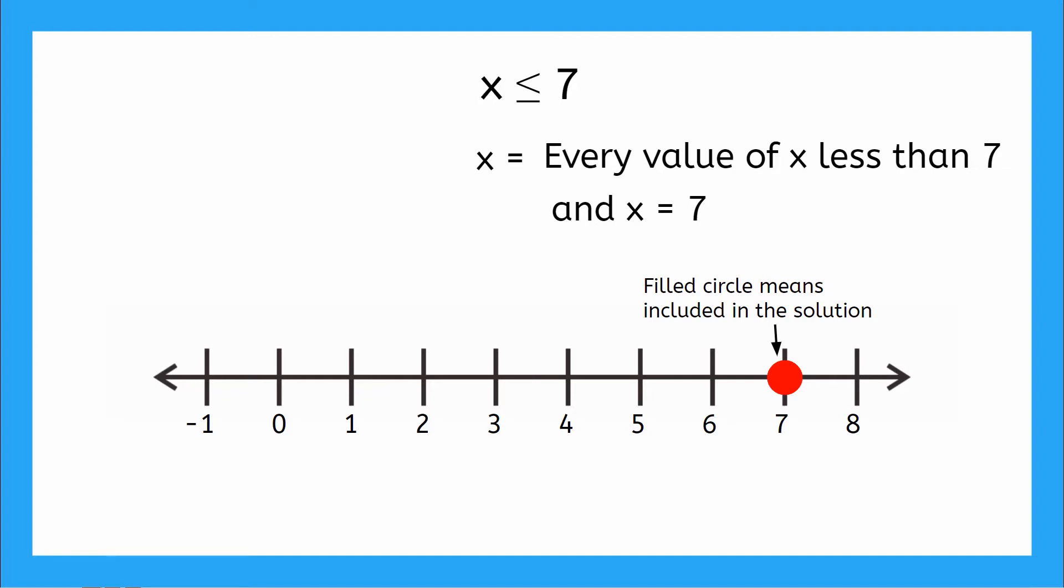And now, I want to include all the numbers that are less than 7. So what direction should my arrow point? Yeah, my arrow should point towards 0 and include all of the negative numbers. And that's it. We've plotted the solutions to the inequality x is less than or equal to 7.